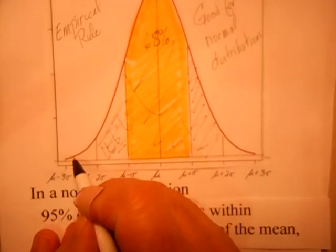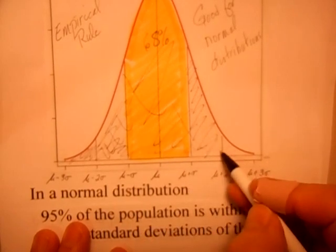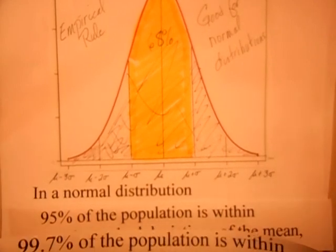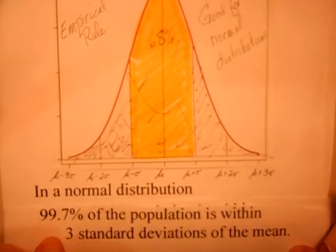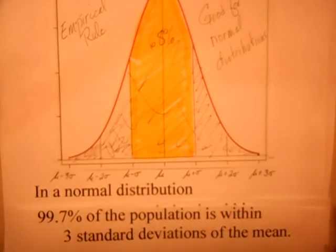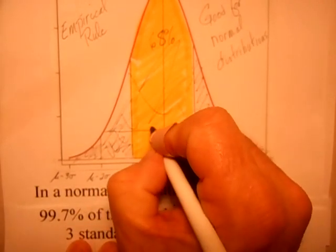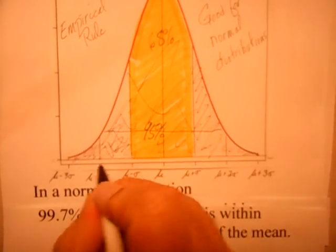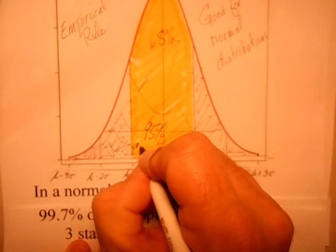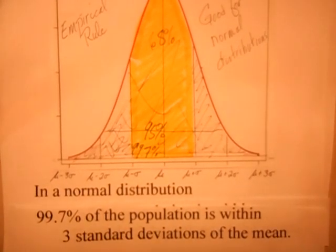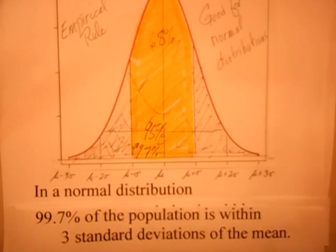And finally, if you go out to three standard deviations, you can see in this chart that you've got nearly everything — there's just a little bit of tail out on the end. Within three standard deviations of the mean, you're going to have 99.7% of the population. So: 68% within one, 95% within two, 99.7% within three. The empirical rule works very well if you have reason to think your population is somewhat normal.